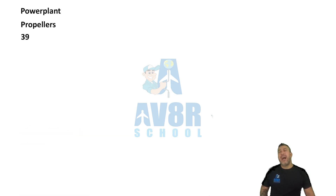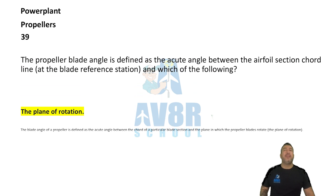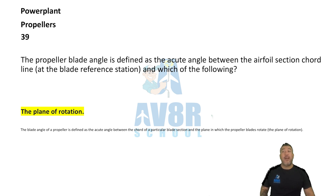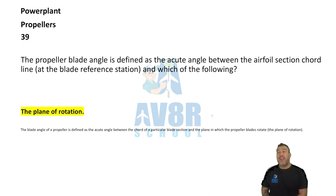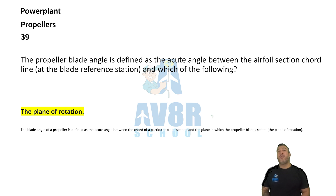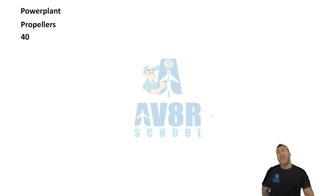Number 39. The propeller blade angle is defined as the acute angle between the airfoil section cord line at the blade reference station and the plane of rotation.